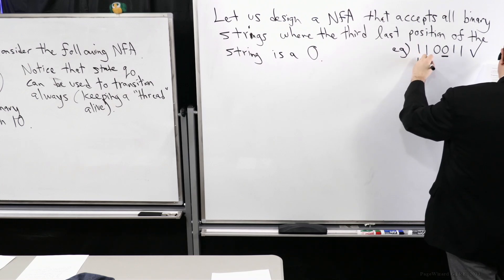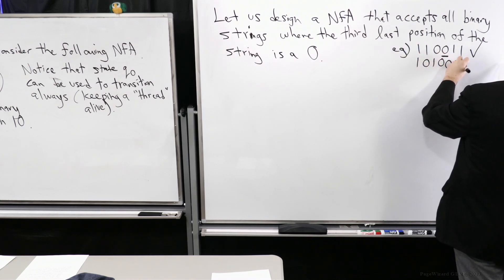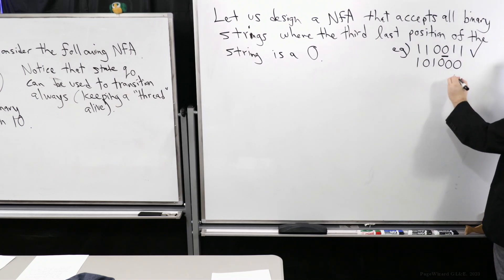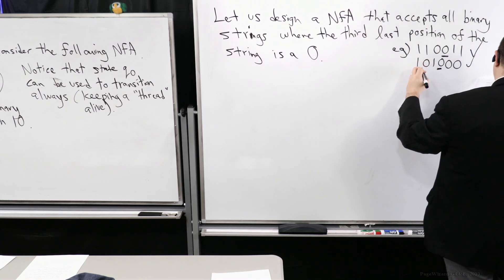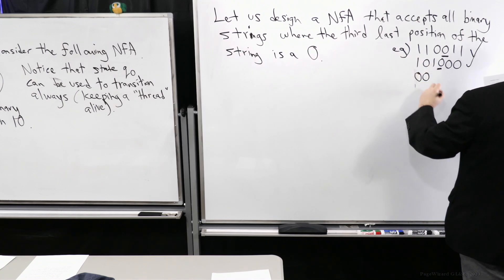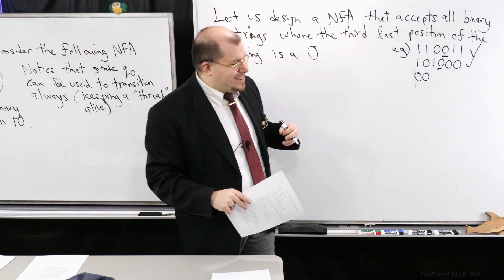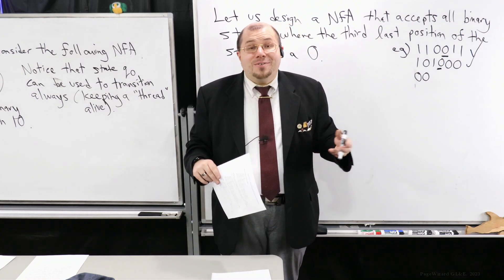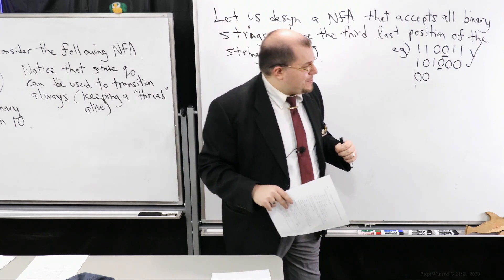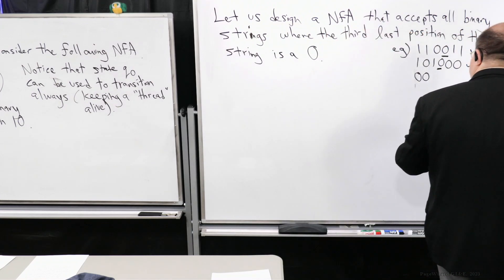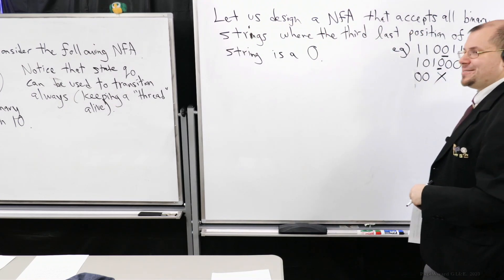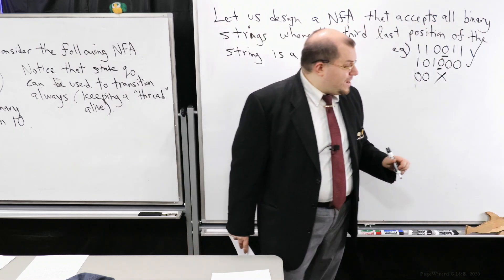How about 1, 0, 1, 0, 0, 0. That's the last position, second last position, third last. It's a zero, so accept. How about this one? 1, let's do something fun here. Let's go 0, 0. Should it accept this string? Yes or no. Should it accept or reject 0, 0? Well, it doesn't have a third last position at all, so you should reject it. There's simply not enough symbols in that case.